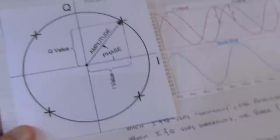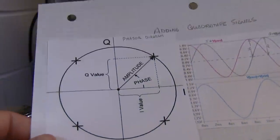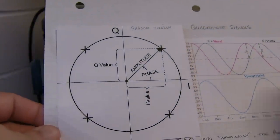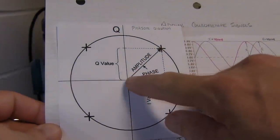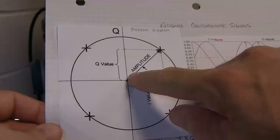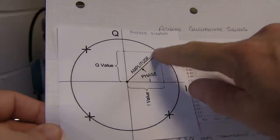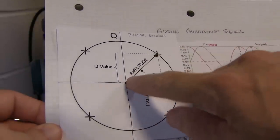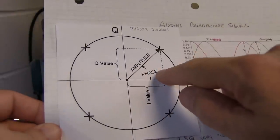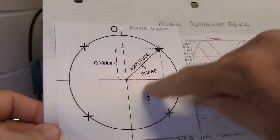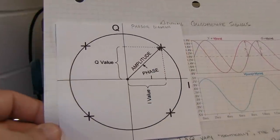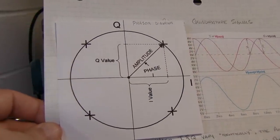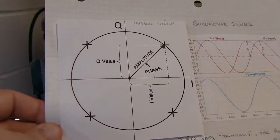From a phasor diagram standpoint, an AM signal is represented by a vector whose length is changing but whose phase is not necessarily changing.